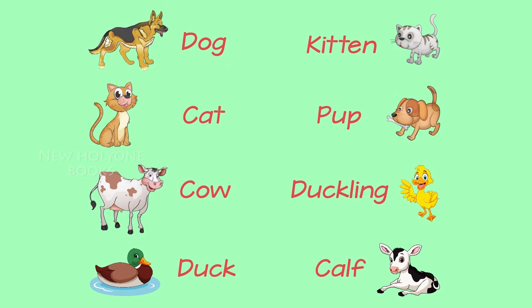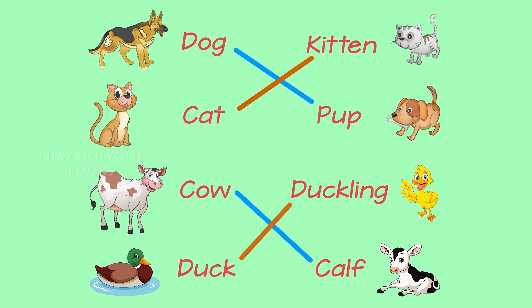Match the following — young ones. Dog: Pup. Cat: Kitten. Cow: Calf. Duck: Duckling.